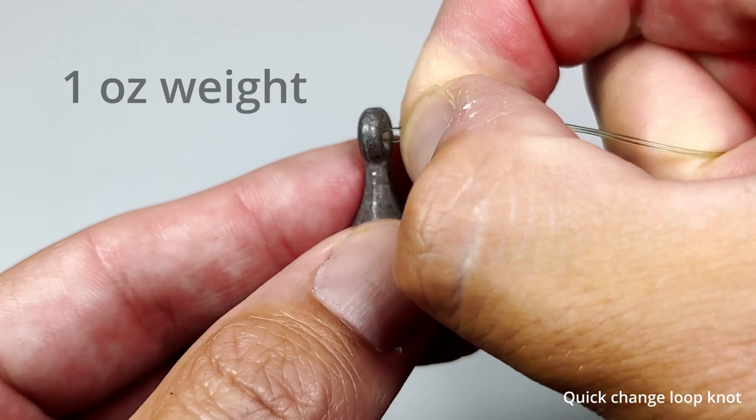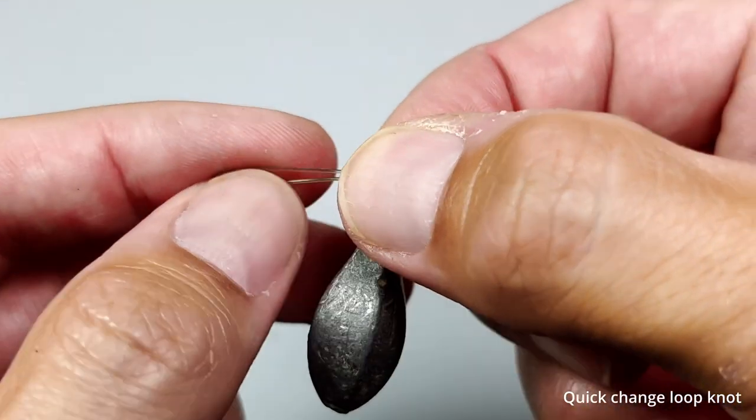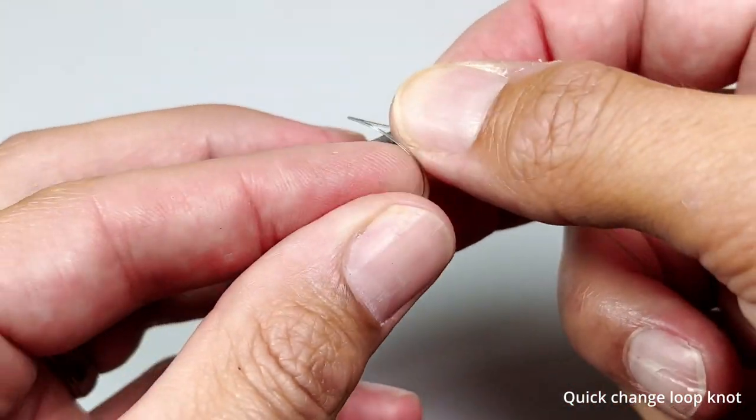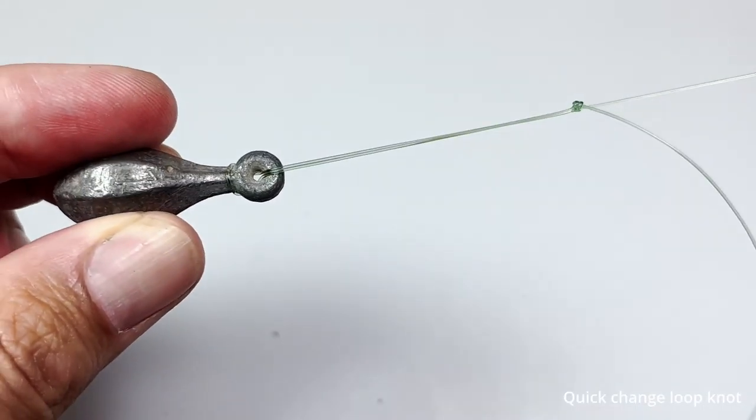You pass the loop through the eye of the weight, then pass the weight back through the loop. And that's ready to go for a drop shot rig.